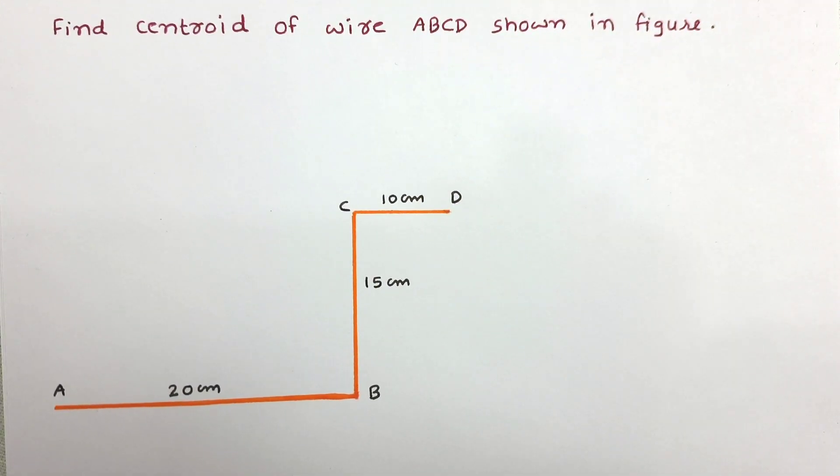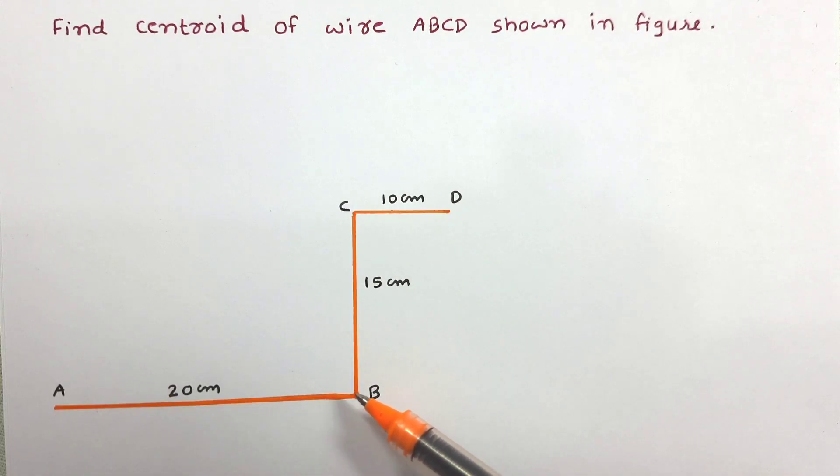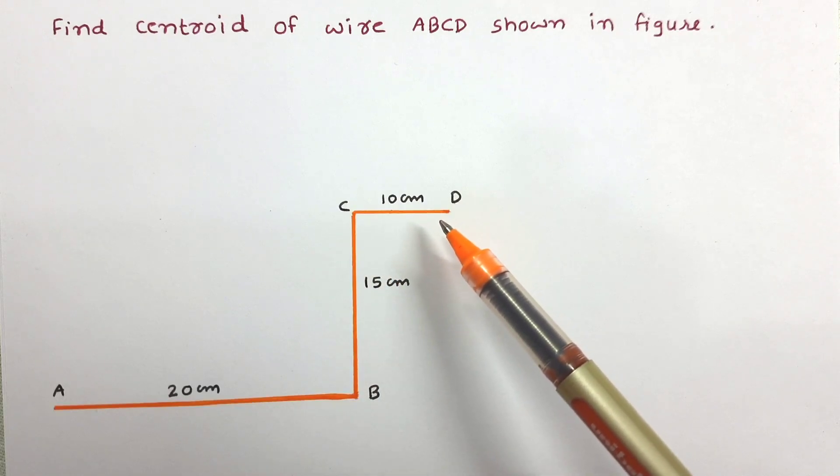This is the data of the problem given. Find centroid of wire ABCD shown in figure. So here figure is given where a wire ABCD has been shown. This wire is made up of three parts: wire AB, wire BC, and wire CD.